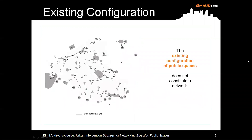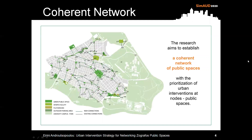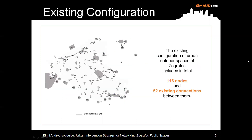The research aims to establish a coherent network of public spaces, as the existing configuration does not constitute a network. Starting with the existing configuration, we realize that this contains 116 nodes and only 52 existing links between them.